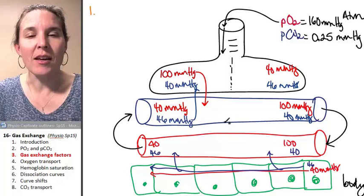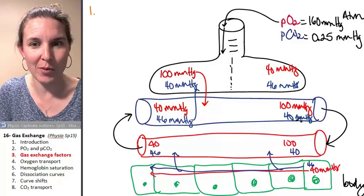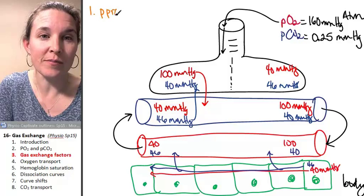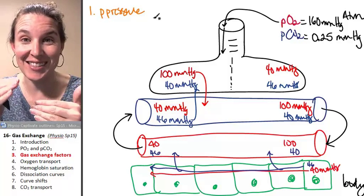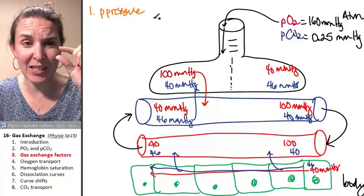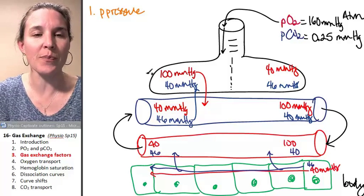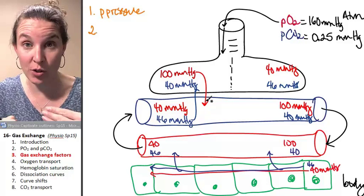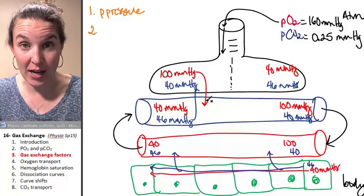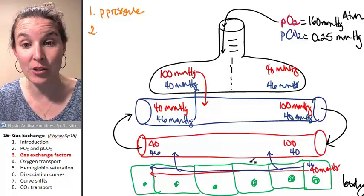The first factor that affects gas exchange in the body is the most obvious, and it's what we've been talking about this whole time. Partial pressure differences affect gas exchange. If you do not have a partial pressure difference, or if you have a tiny partial pressure difference, you're not going to get very efficient gas exchange. So that's one factor that's going to affect the rate and the efficiency at which gas exchange takes place, and we're talking about both external respiration and internal respiration.